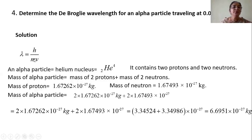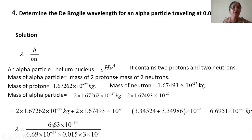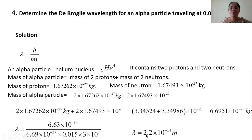Now, using this formula, lambda equals h divided by mass of alpha particle times velocity. The velocity is given as 0.015c, that means 0.015 times the velocity of light, which is 3 into 10 power 8 meters per second. Substituting all values, the answer comes out to be 2.2 into 10 power minus 14 meter.